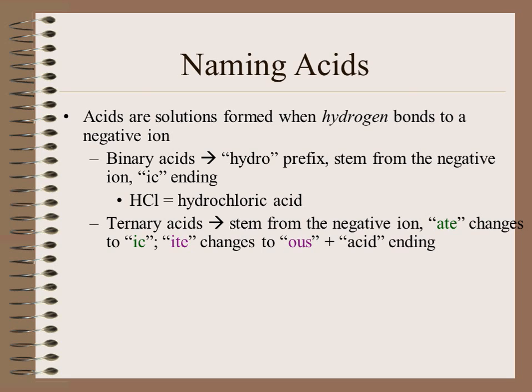For ternary acids — acids where hydrogen is bonded to a polyatomic ion — the ending of the acid name is determined by the ending of the polyatomic ion's name. The stem comes from the polyatomic ion, the anion. There is no hydro prefix placed at the beginning of ternary acid names, unless there's a prefix on the anion, such as per or hypo — those are retained.